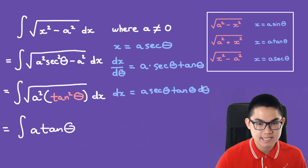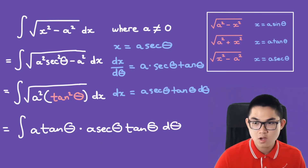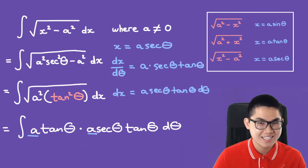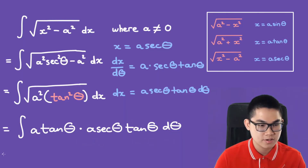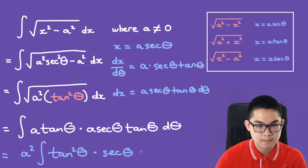And dx is a times secant times tan d theta. Notice that a and a are constants, so we can move them outside of the integral. We get a squared times tan squared times secant d theta.